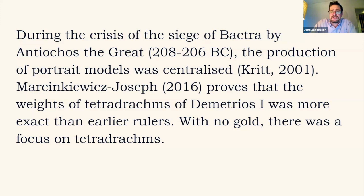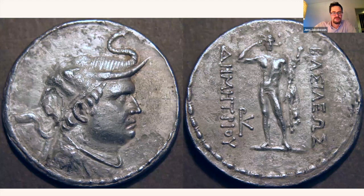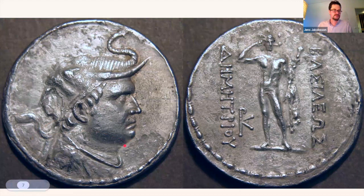Demetrius didn't issue any gold coins, so the tetradrachm became the prestige issue and a more important focus for propaganda, with very reliable weight so people could trust them. This ushers in the heyday of Bactrian portraiture — Sogdiana was lost, gold was lost, the tetradrachm became artistic, and the weight became very reliable, all happening at the same time. Here we have one of these coins — Demetrius is depicted as something of a heavyweight if we can trust this portrait, at least a more individual portrait than before.